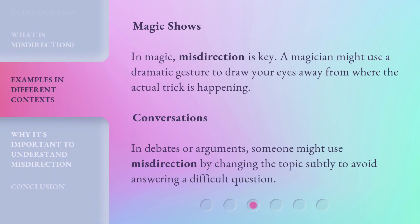In magic, misdirection is key. A magician might use a dramatic gesture to draw your eyes away from where the actual trick is happening.